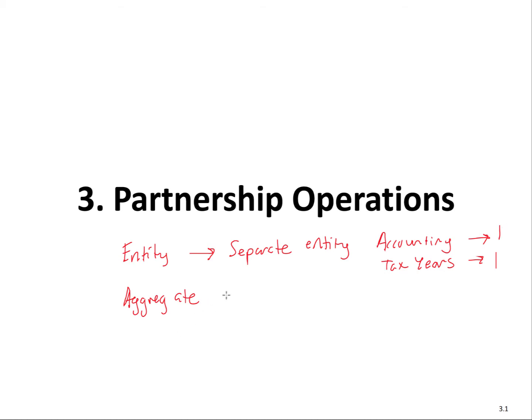The aggregate theory goes to the general idea that there's only one level of tax and that the items of the partnership flow through to the owners — which is the actual idea of partnership taxation. There's only one single level of taxation, not double taxation like C corporations. You'll see these competing theories as we consider the various rules throughout partnership taxation, but even specifically so in this discussion.